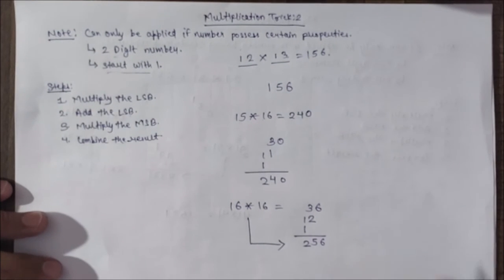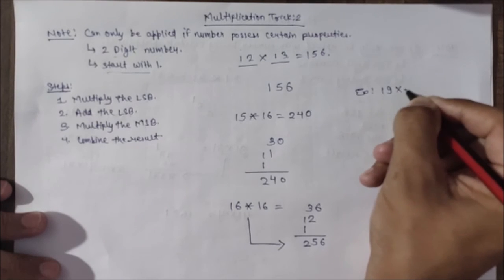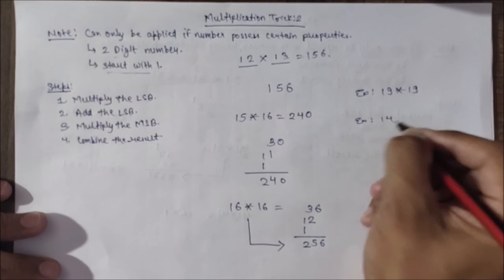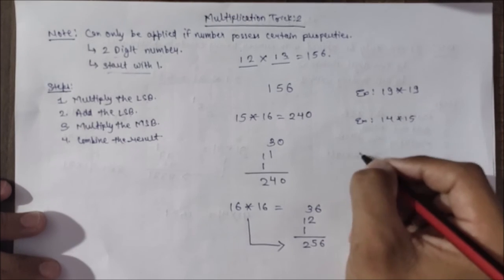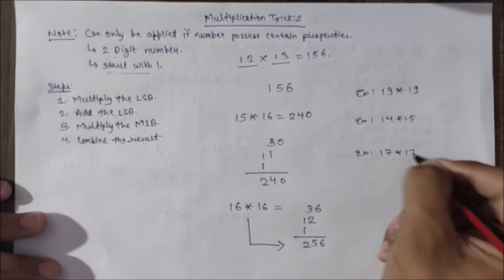I am giving some examples. Please try them. 19 multiplied by 19, 14 multiplied by 15, 17 multiplied by 17.